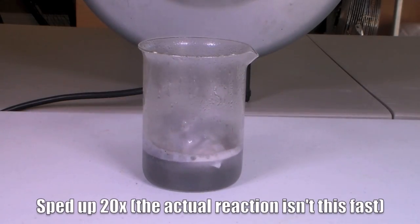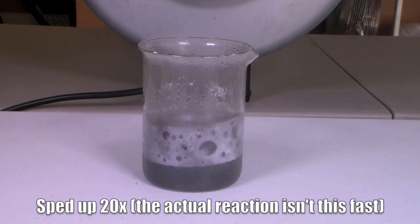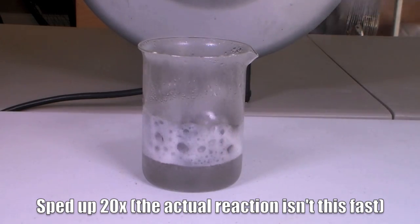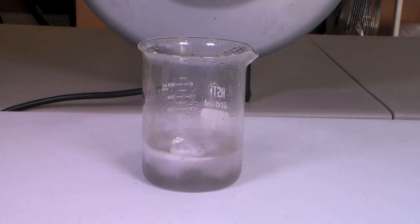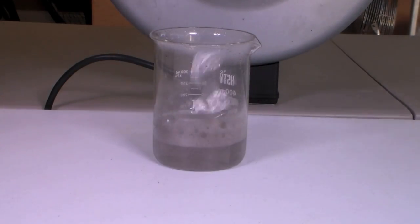This reaction produces a lot of Hydrogen Chloride fumes, so do it outside or in a fume hood. Continue adding Aluminum Foil to the hydrochloric acid until all of the Aluminum has dissolved.